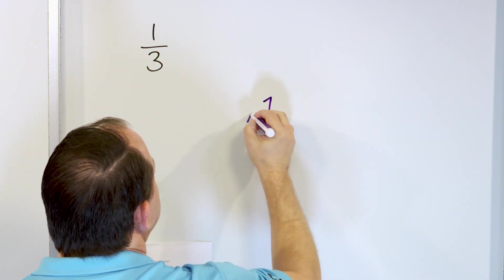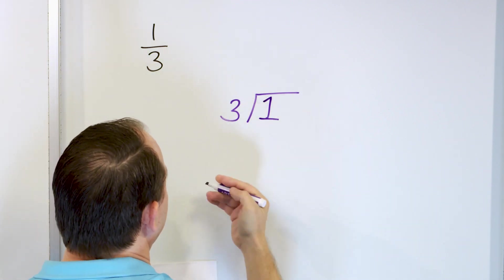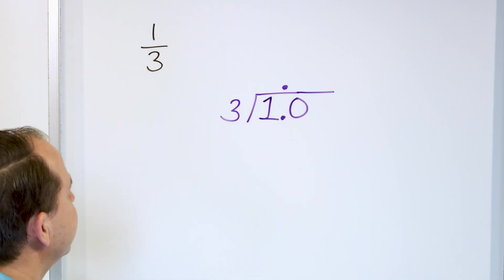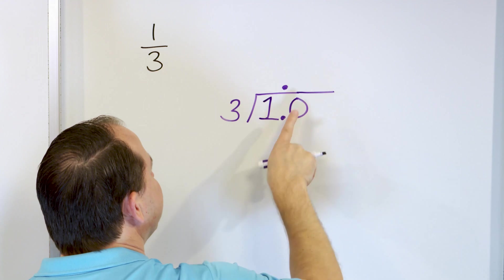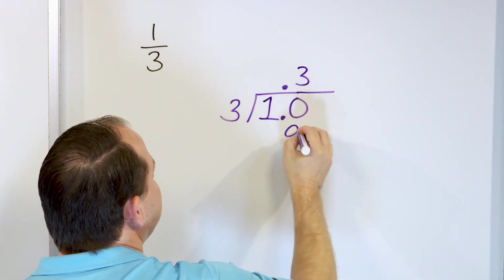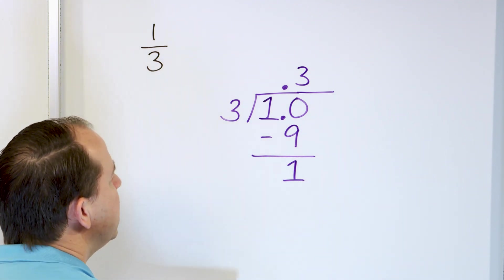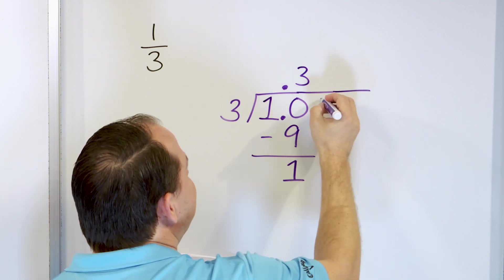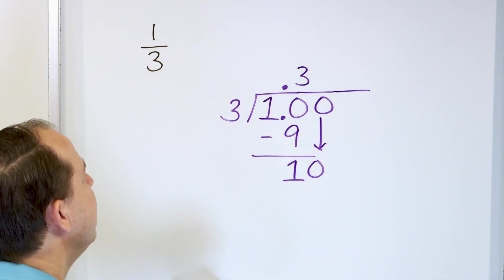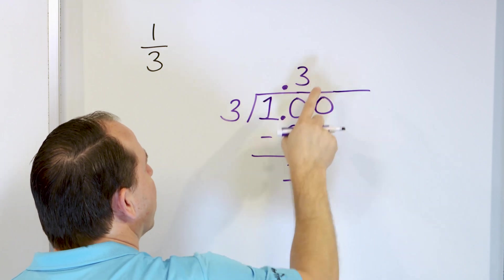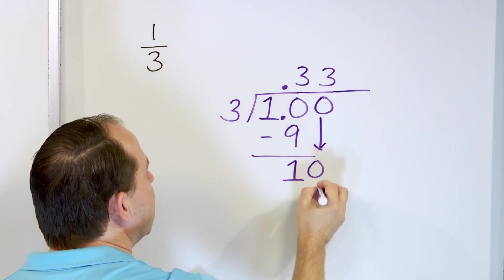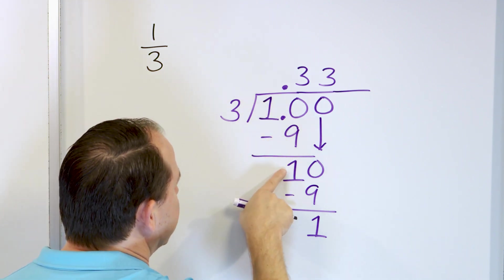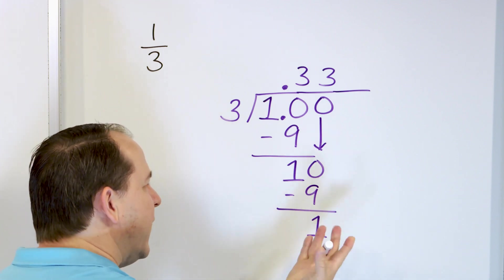1 divided by 3. We drop our decimal point and add a 0, and the answer will have a decimal right above. 3 times something is 10 — 3 times 3 is 9, 3 times 4 is 12, that's too big — so 3 times 3 = 9. Subtract: 10 minus 9 is 1. We did not get a remainder of 0, so we continue. We add another 0 and drag it down, giving us a 10 again. 3 times 3 is 9 — subtract — 10 minus 9 is 1. You might start seeing a pattern forming: we had 10 minus 9 giving 1, dropped a 0, then again 10 minus 9 giving 1. We still don't have a remainder of 0.